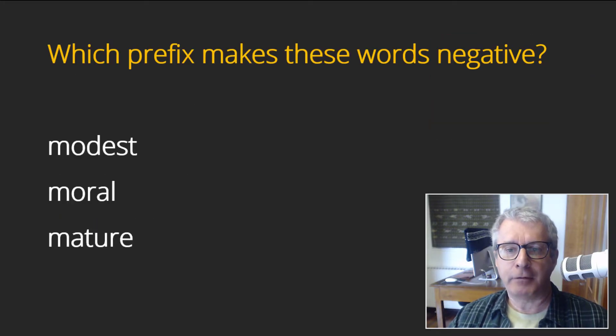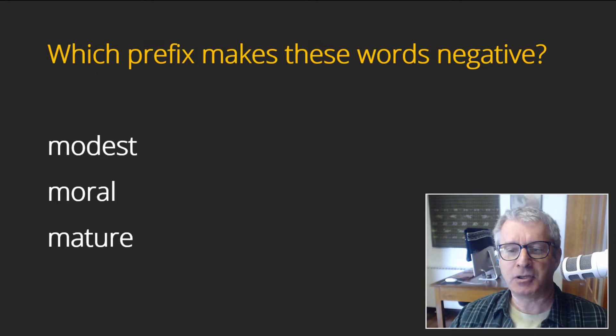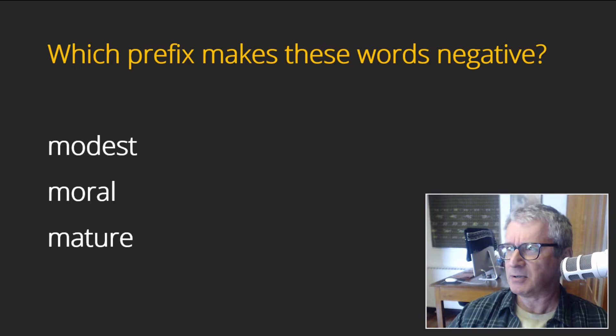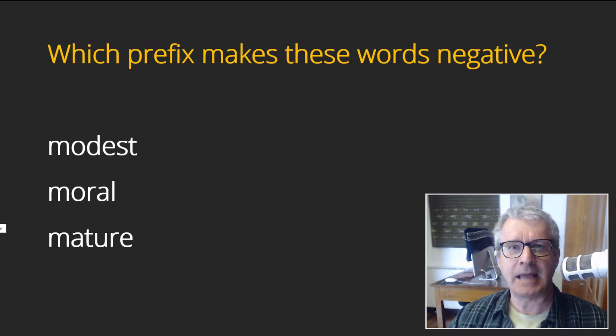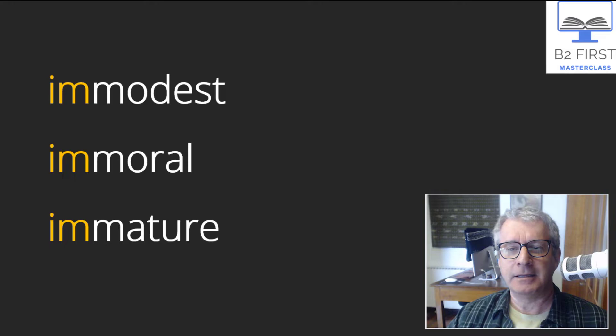Moving on, we have three more. Which prefix makes these words negative? Modest, moral—to have moral values—and mature. Notice the pronunciation of mature: it's a 'ch' sound. Mature. I'm a very mature person; I don't do silly things. Do you know the prefix that makes these adjectives negative? Here's the answer: 'im-.' Notice the double M's: immodest, immoral, and immature.